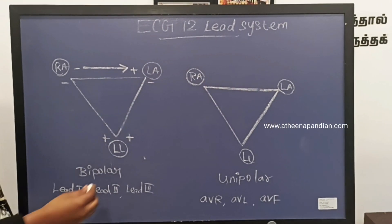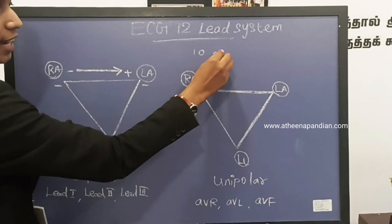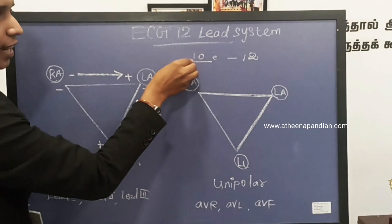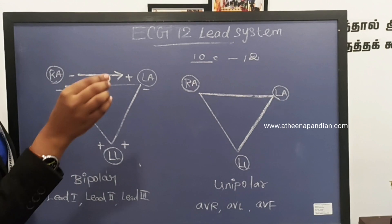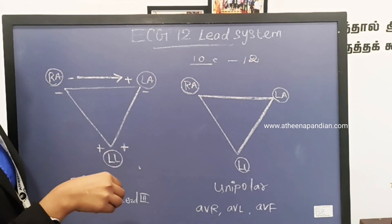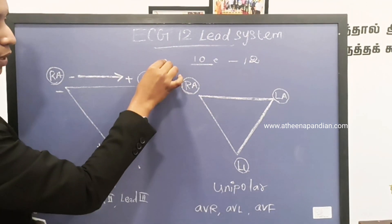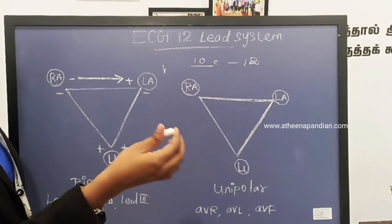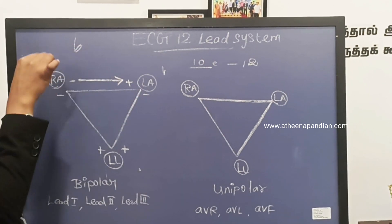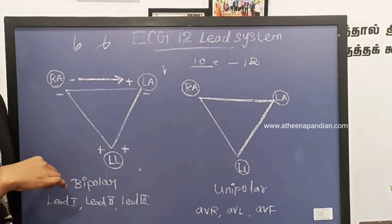This is the ECG 12-lead system. In this system, we are using 10 electrodes to take 12 ECG waveforms. These 10 electrodes are placed in the right arm, left arm, left leg, and right leg, and then chest electrodes V1, V2, V3, V4, V5, and V6. So here we are using 6 limb electrodes and 6 chest electrodes.